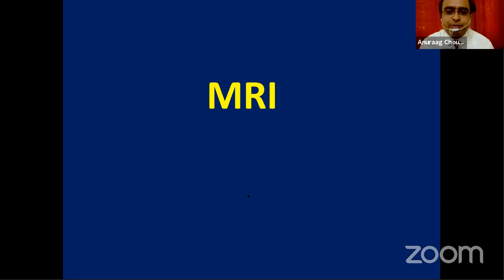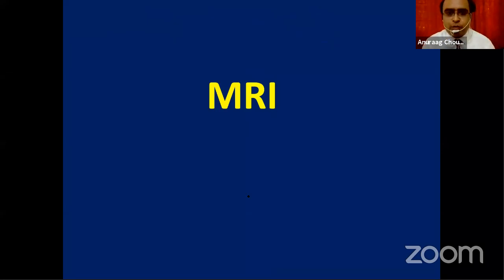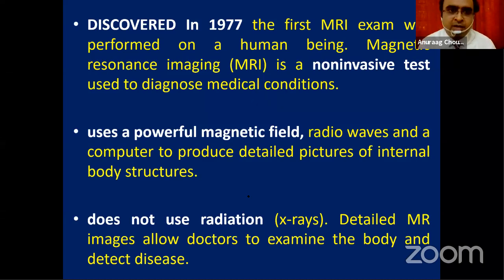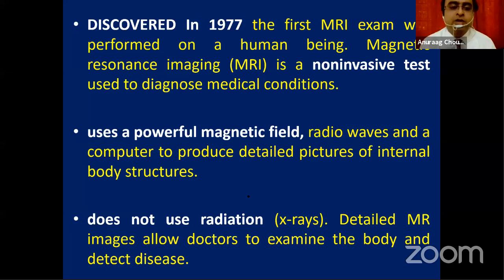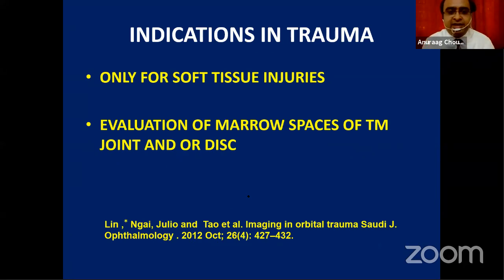MRI and USG can also be considered imaging modalities for maxillofacial trauma. MRI is indicated in very few cases of soft tissue or bone injury. Discovered in 1977, MRI is a non-invasive test giving 3D images using non-ionizing radiation — very safe for young patients with expected soft tissue injury. It uses a powerful magnetic field with no radiation. Indications include soft tissue injury evaluation, marrow space assessment of the TMJ, condyle, and articular disc specifically, which may be injured in condylar fractures.